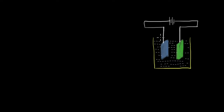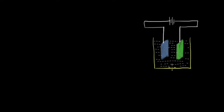We have seen the setup of an electrolytic cell before. One of the applications of electrolysis is in purification of metals. So let's say if one of the electrodes is made up of copper, but it also has some impurities. After electrolysis, copper gets deposited on the other electrode, and the impurities fall into the solution, and you get pure copper.